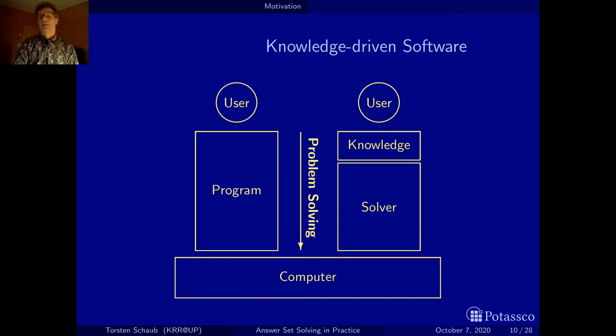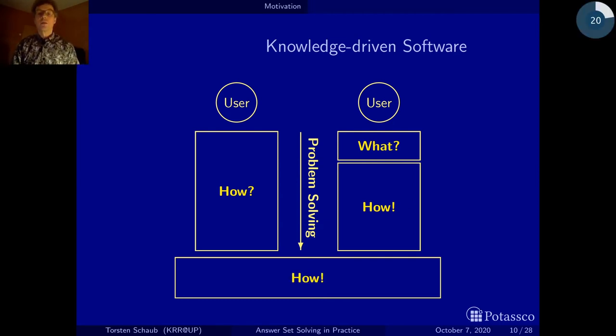Let me make this precise now. So on the traditional side a program solves the how problem, how to solve the problem. Now on the knowledge driven declarative side the idea is that the only problem specific part is here this what is the problem. This is where the question mark is, what is the problem. While the solver is a specialist in problem solving, in the same way as a computer can solve all computable functions, the solver can solve all problems it can solve. We'll make this precise in a sec. It's actually combinatorial optimization problems, but it's a generic tool that allows to solve such problems.